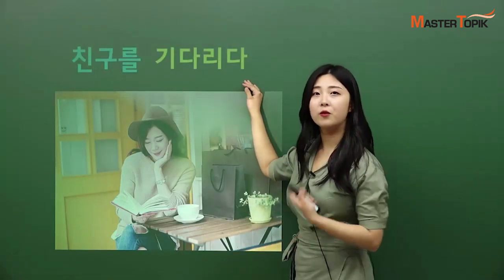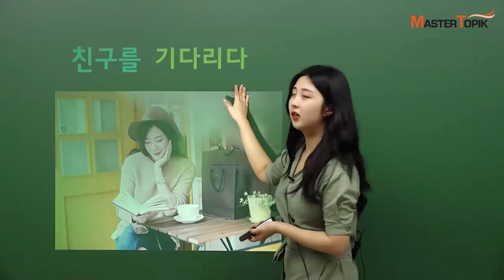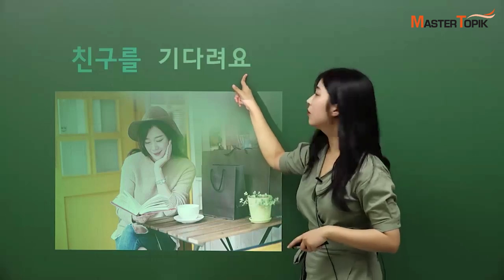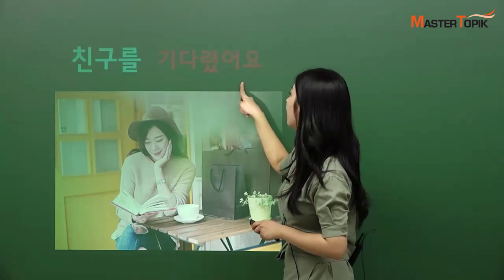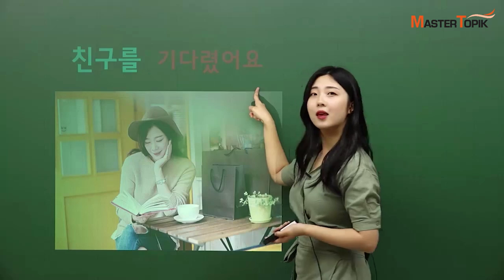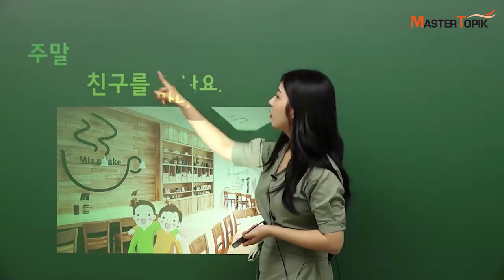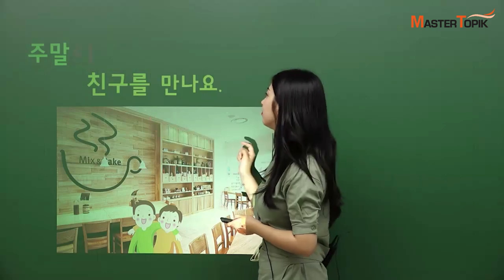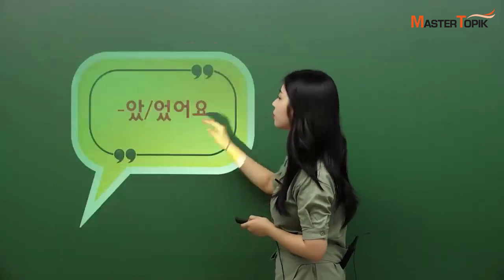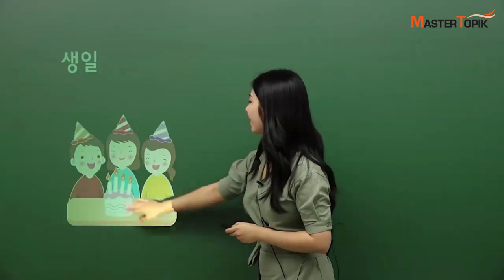We can also wait for our friends at the cafe — 친구를 기다리다, waiting for our friends. 기다리다 turns into 기다려요 for present tense, and 기다렸어요 for past. 친구를 기다렸어요. 주말에 커피숍에서 친구를 만났어요.